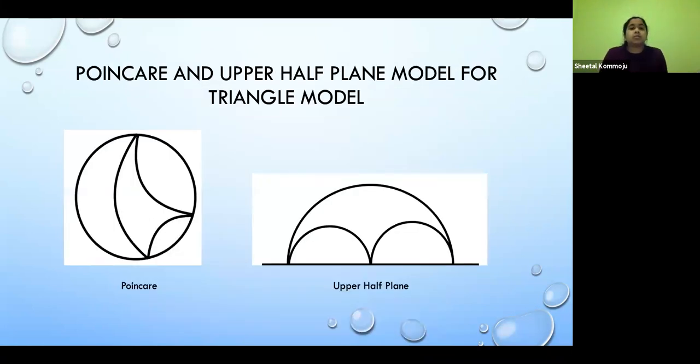And now we have another Poincaré and upper half plane model. So again, if I were to cut this boundary circle and stretch it into a straight line, I would have the upper half plane model and the semicircles that are the lengths of each side of the triangle would intersect the boundary circle at right angles. So here, here, here, here, here would all be at right angles.